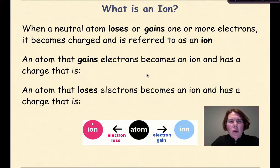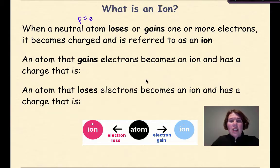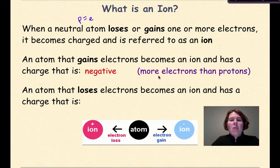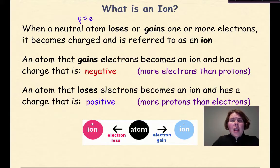So what is an ion? Well, when a neutral atom — in other words, protons equal electrons — loses or gains one or more electrons, it's going to become charged, and then it's referred to as an ion. An atom that gains electrons will become an ion and will have an overall charge that is negative, meaning more electrons than protons. If the atom loses electrons to become an ion, it's going to have a charge that is positive, and therefore will have more protons than electrons.